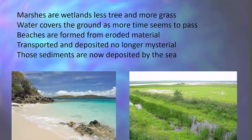Deposition lays it down. Marshes are wetlands — less trees and more grass, water covers the ground as more time seems to pass. Beaches are formed from eroded material, transported and deposited. Those sediments are now deposited by the sea.